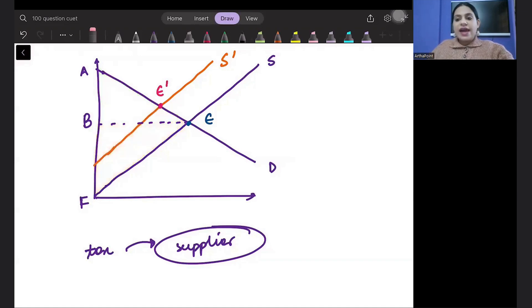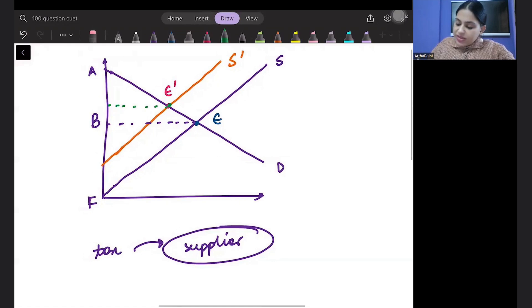Now Bitta, after tax supply reduces. So my new equilibrium point comes to point E dash. And we know that the price paid by consumer is this. And the net price received by producer is this. And the gap between these becomes Bitta my tax. So my tax revenue is this much. All of you remember these concepts?